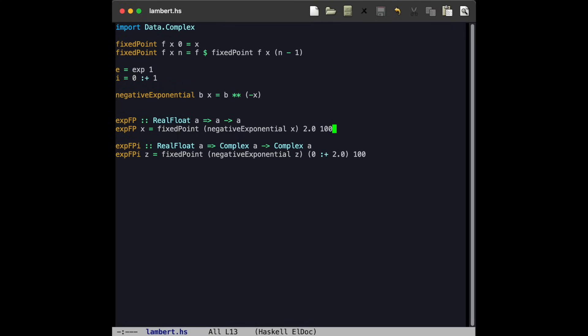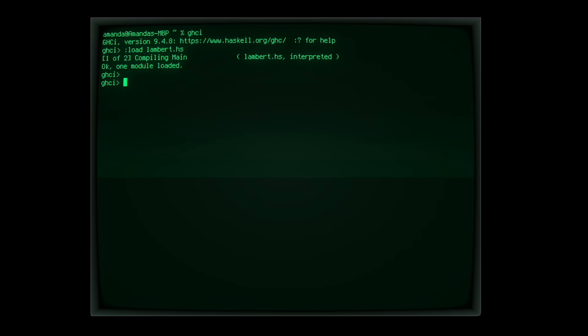We can take the same fixed point program we wrote in the language Haskell for that other video, and apply e to the minus x as the function argument. This gives us a relatively easy way to compute the omega constant.